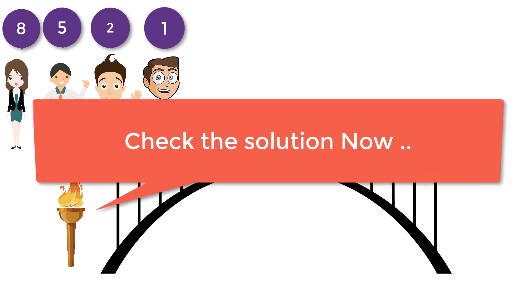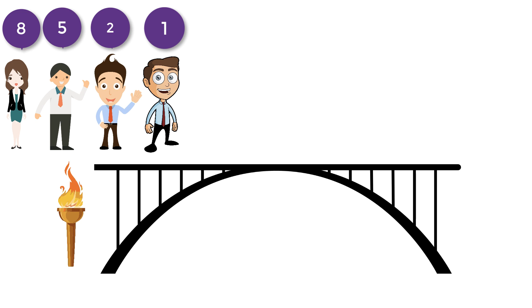Let's check the solution now. The initial solution most people will think of is to use the fastest person as a guide to everyone across. If that is the case, it will take 17 minutes to cross the bridge and this is not the right solution.